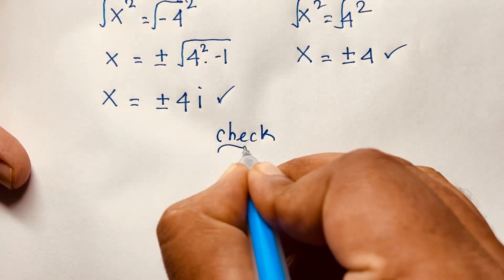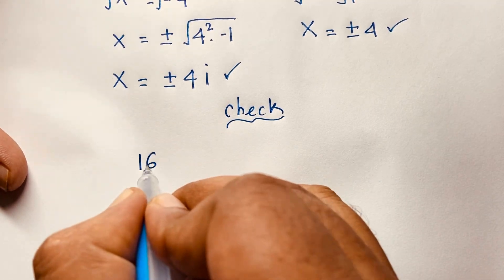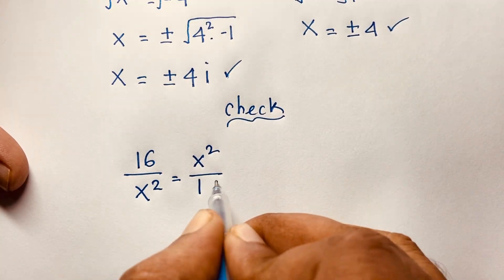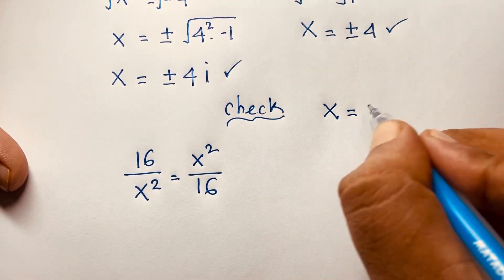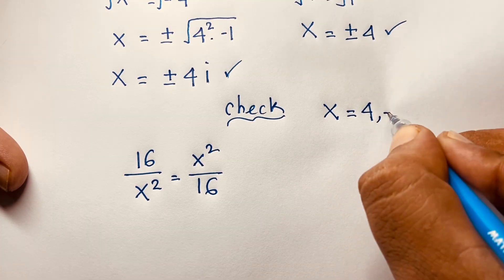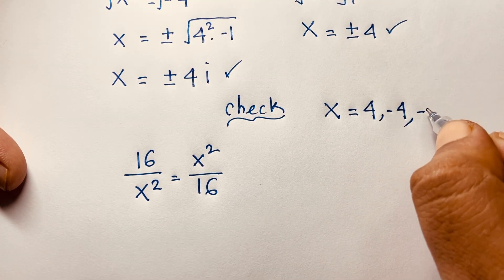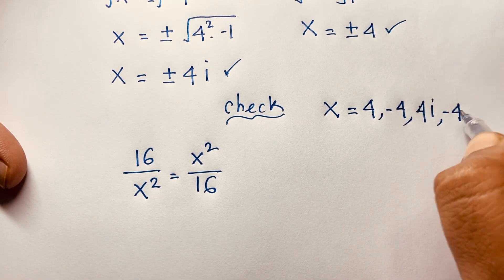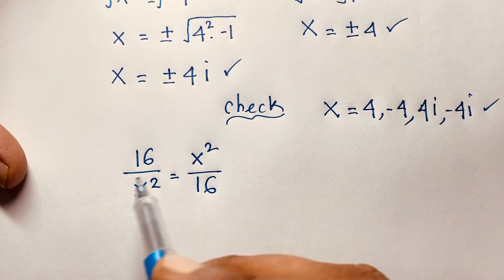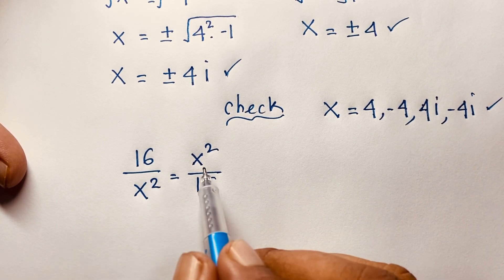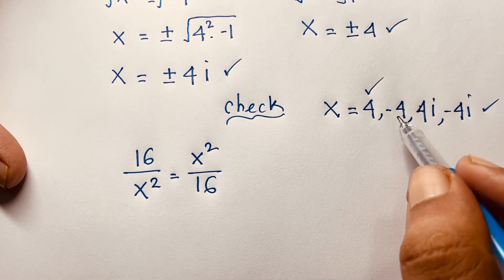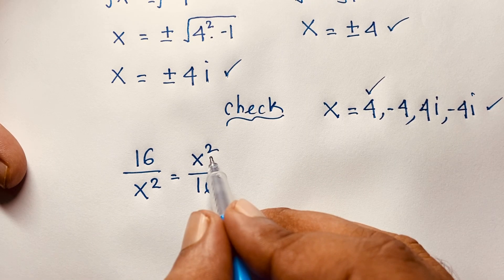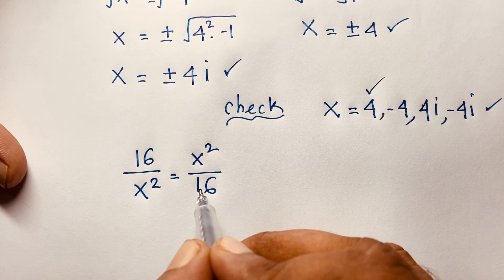Let's verify our original equation: 16 over x squared equals x squared over 16. We found x equals positive 4, x equals negative 4, x equals positive 4i, and x equals negative 4i. If x equals 4, then 4 squared is 16 on both sides, giving 1 equals 1, which is correct. If x equals negative 4, since the power is even the result is always positive, so 16 over 16 equals 16 over 16, which is 1 equals 1.